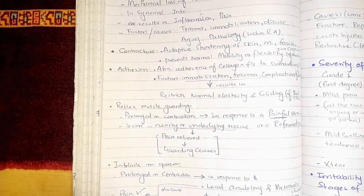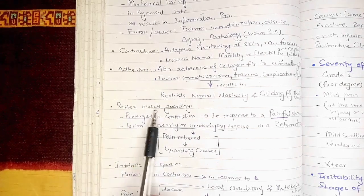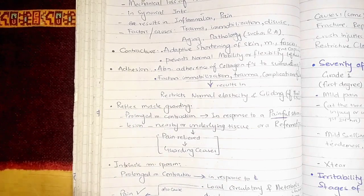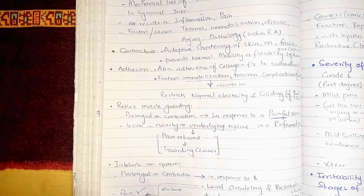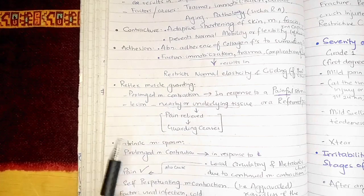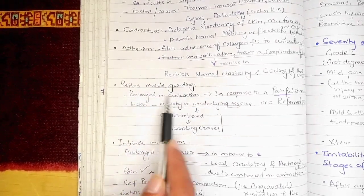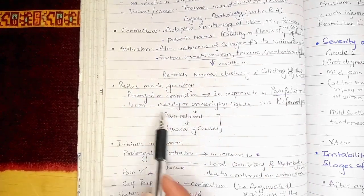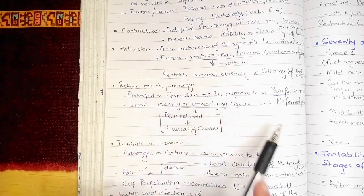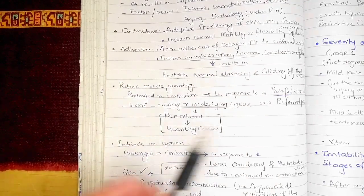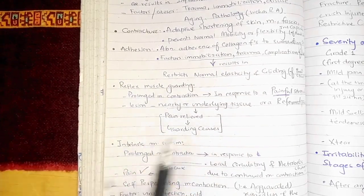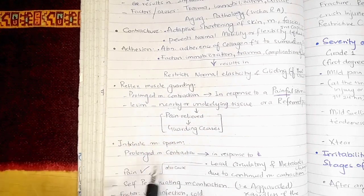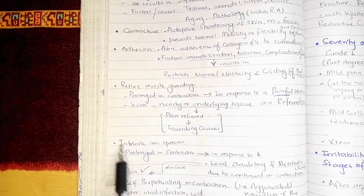Then we have reflex muscle guarding. Reflex muscle guarding is when the muscles guard themselves so that a painful stimulus cannot be increased, or to prevent worsening of the condition. It is a prolonged muscle contraction in response to a painful stimulus, which can result from a lesion in nearby or underlying tissues, or it can also be a referred pain — pain arising from some other location. When the pain is relieved, the guarding will ultimately cease.